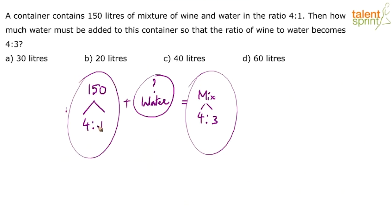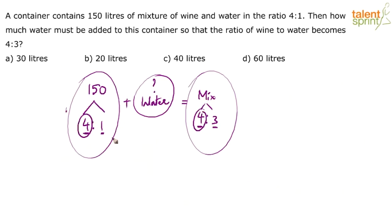If you observe the ratios: in the initial case, wine is 4 parts; in the final case, wine also remains 4 parts. Only the number of parts of water has increased — it was 1 part of water and now we have 3 parts of water. So the simple logic is: since the number of parts for wine is the same (4 in both ratios), water has increased by 2 parts. Water was only 1 part earlier, now it is 3 parts — so 2 more parts of water have been added.